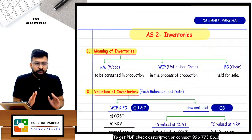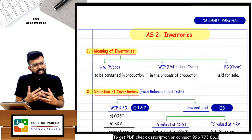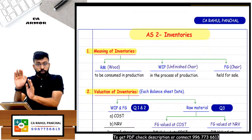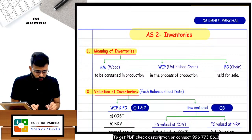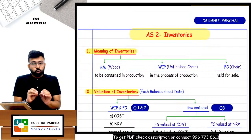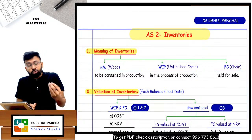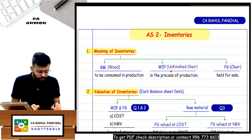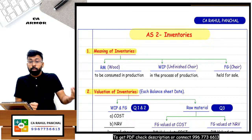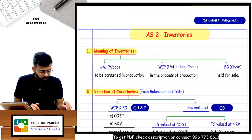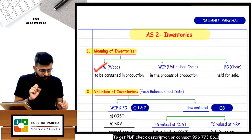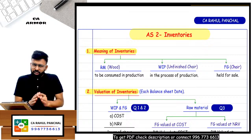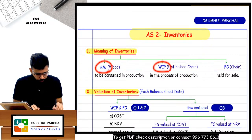When I say inventory, let's say I manufacture and sell chairs. At the end of the year in my godown there are unsold chairs — that is finished goods held for sale. There are chairs on which work has started but not completed — that is WIP (work in progress). And there is wood purchased but work hasn't started — that is raw material. So there are three inventories: raw material, WIP, and finished goods.